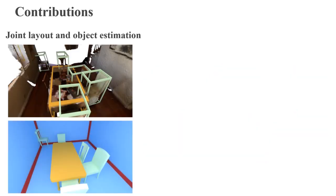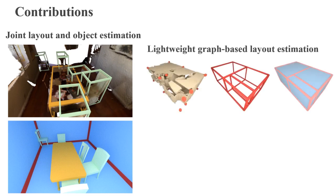In summary, we present a new approach that jointly optimizes for scene layout and object arrangements, leveraging a lightweight graph neural network to estimate the relationships between objects as well as between objects and layout.